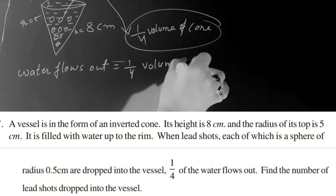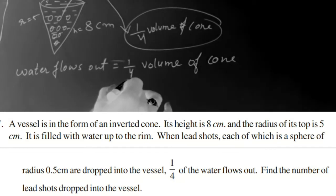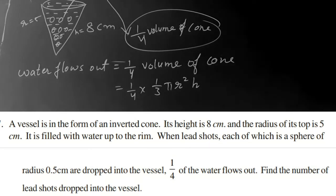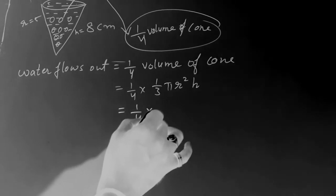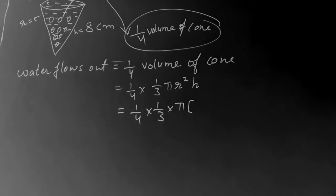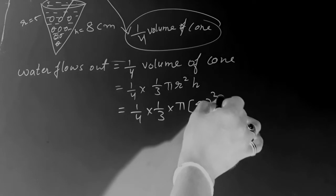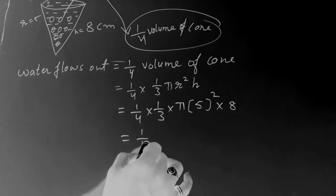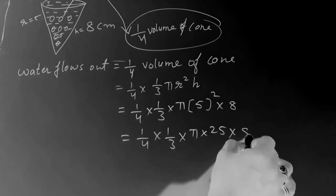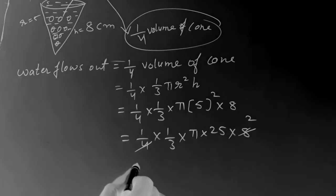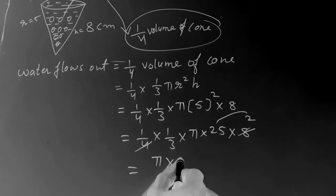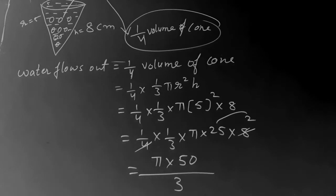Water that flows out equals one-fourth the volume of the cone, which is (1/4) × (1/3) × π × r² × h. Leave π as it is. Substituting r = 5 and h = 8: (1/4) × (1/3) × π × 25 × 8. Simplifying: 8 divided by 4 gives 2, so we get π × 25 × 2 in the numerator and 3 in the denominator, giving 50π/3.